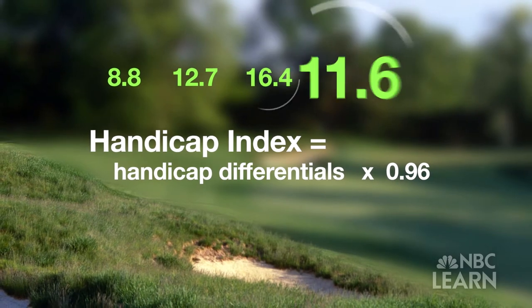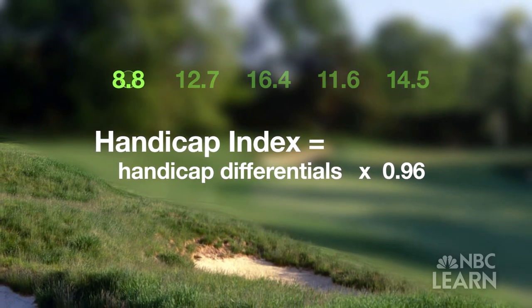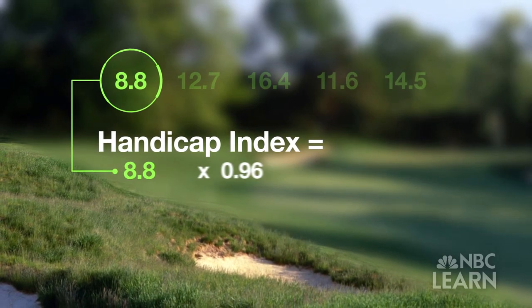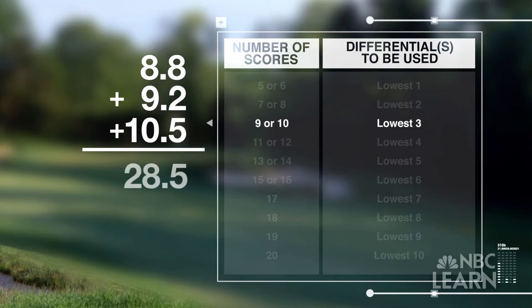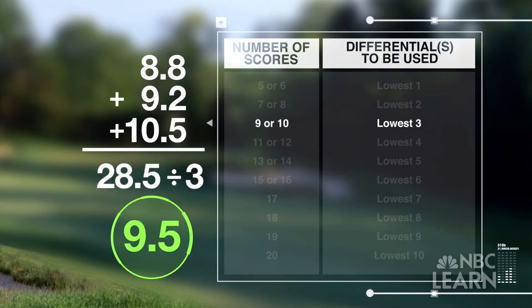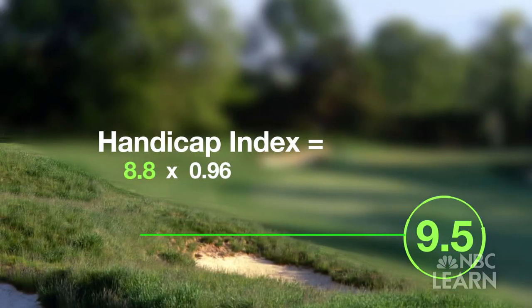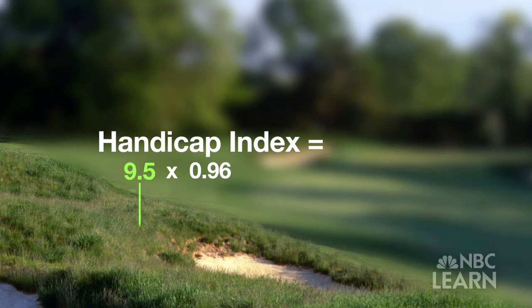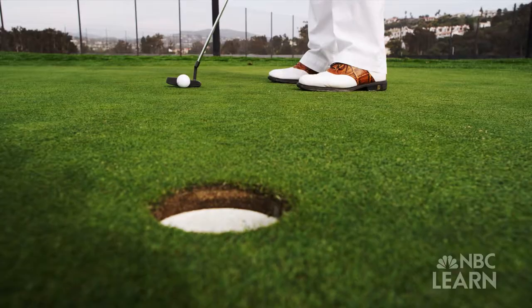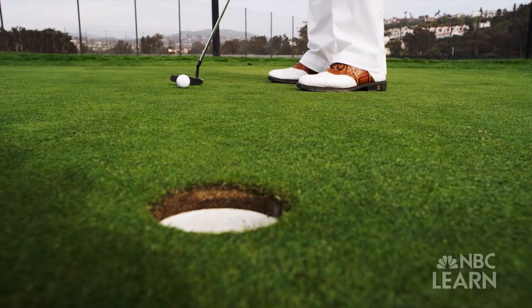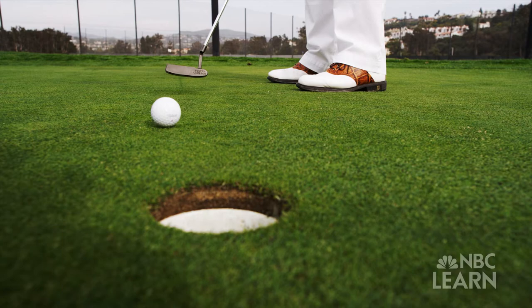With only five differentials, find the lowest and put that into the handicap index equation. When the number of scores increases, multiple differentials are added together and then divided by the number of differentials to find the average, which is put into the equation. The handicap system doesn't look at an average of all your scores — rather, it uses a better half average of your scores. So the system looks at when you play well, which is why it's based on potential.